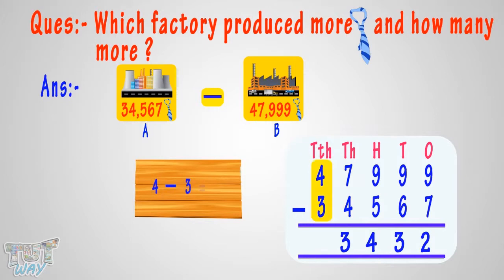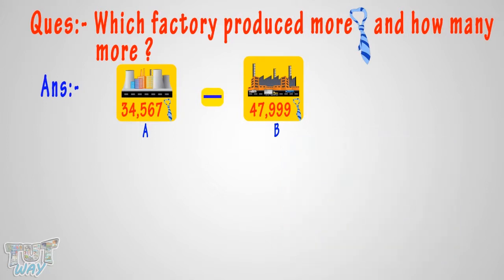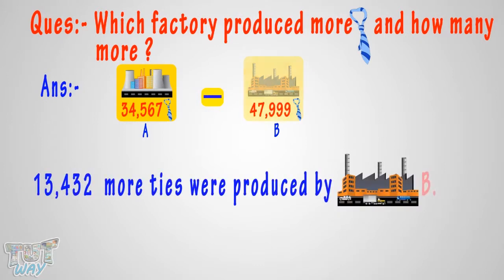4 minus 3 equals 1. Write 1 in difference at 10,000's place. So our answer is 13,432. 13,432 more ties were produced by Factory B.